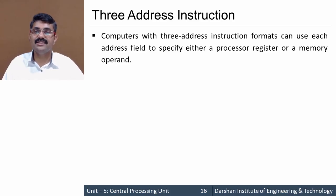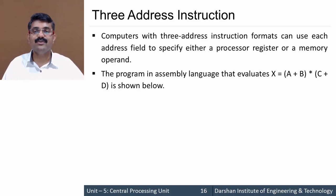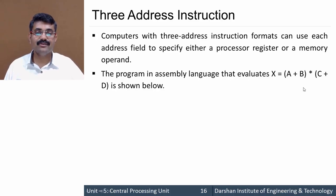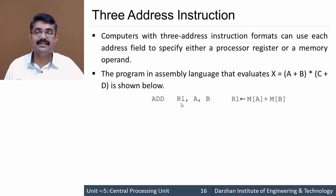As the name specifies, three address instruction means there would be three operands in the instruction. These three operands can be a processor register or a memory location. Let's write one assembly code for evaluating the expression x = (a + b) × (c + d). We know that a + b is evaluated first, then c + d, and the results are multiplied. So the first instruction is: ADD R1, a, b — meaning the contents of memory locations a and b are added and the result is stored in R1.